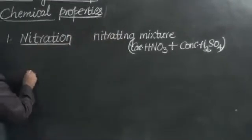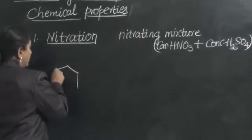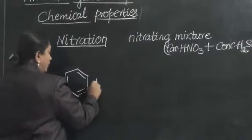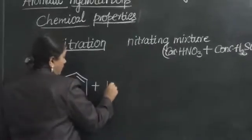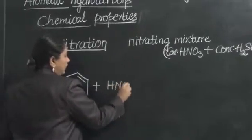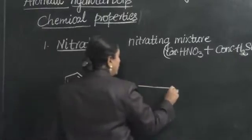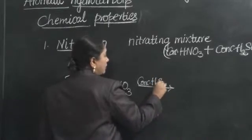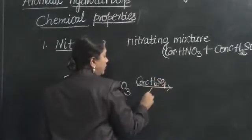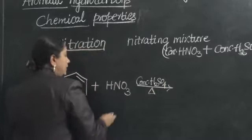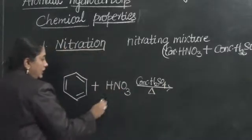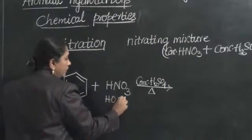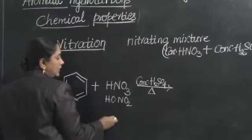So benzene, when subjected to nitration, means we are going to treat this with nitrating mixture - concentrated nitric acid and concentrated sulfuric acid. When we are treating them with benzene, what happens? For the sake of terminology, I will split and write this HNO3 as OHNO2. Still it is HNO3.